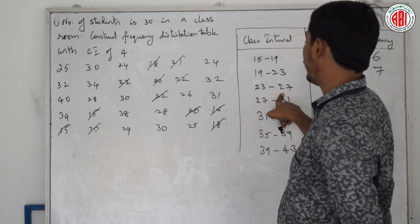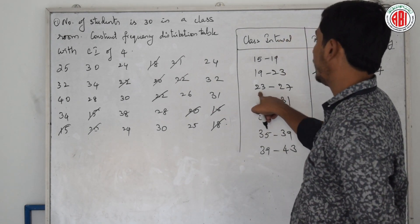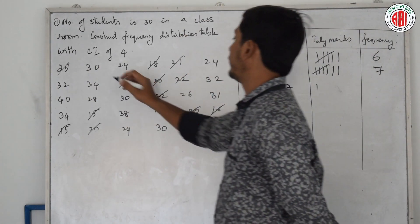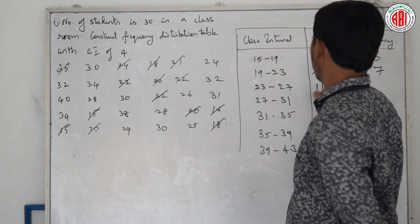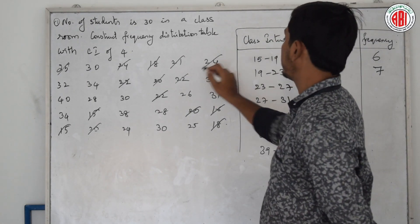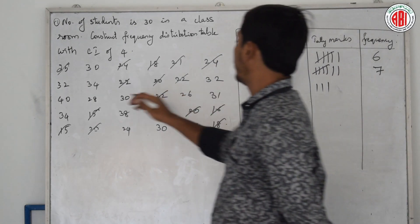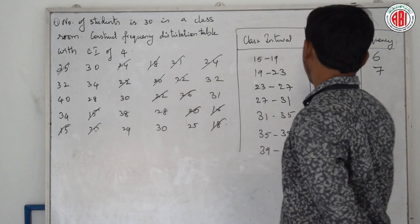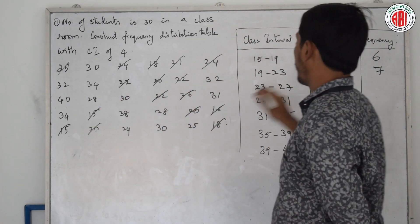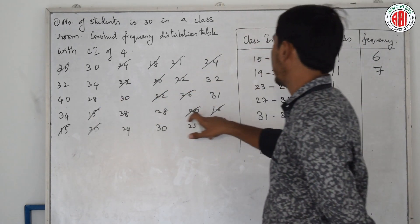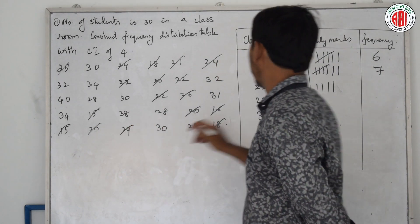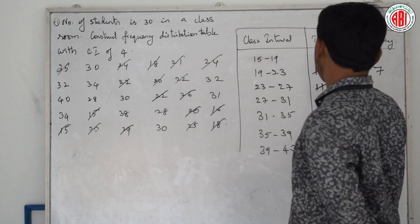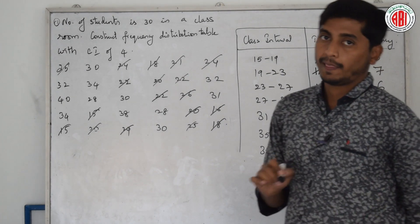Next, for 23 to 27: counting through the data, we find 1, 2, 3, 4, 5, and 6 numbers. So the frequency for class interval 23 to 27 is 6.